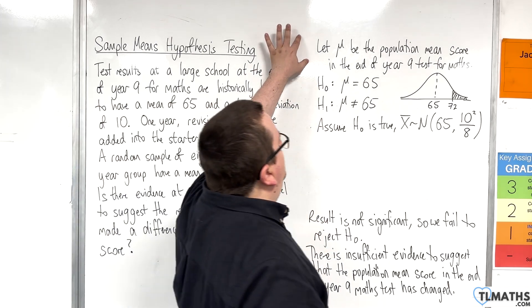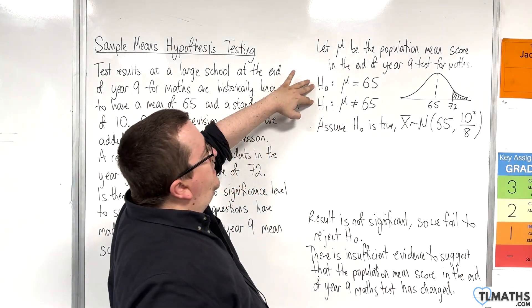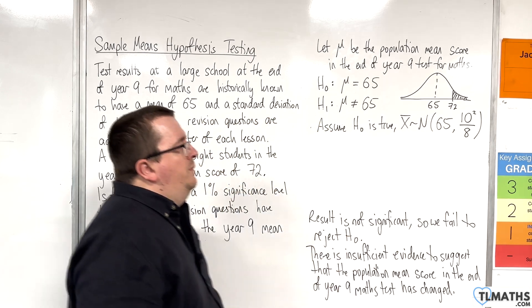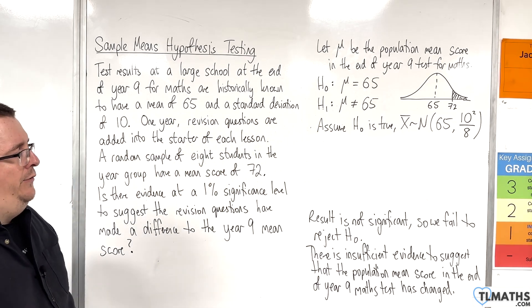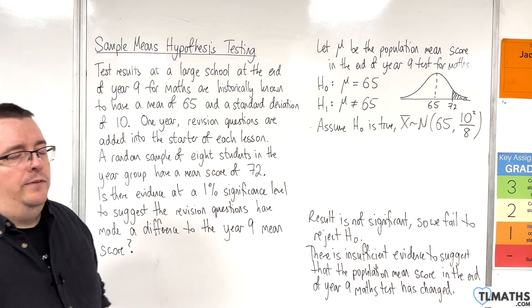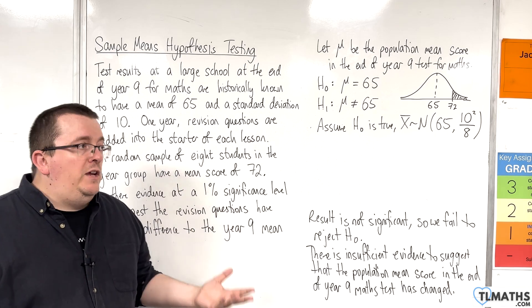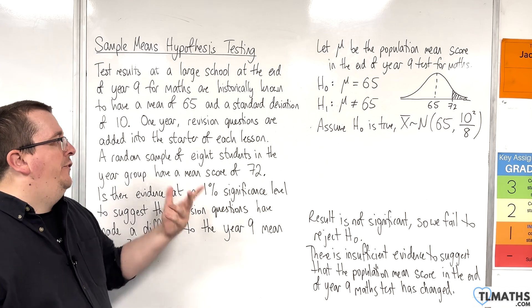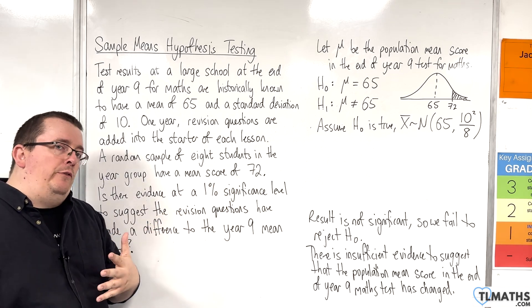So, I have defined mu, I've got my null and alternative hypotheses, I've got my distribution set up for the sample means, I know what the conclusion is. So, in this video, I need to find the critical region and then identify whether 72 is inside or outside.